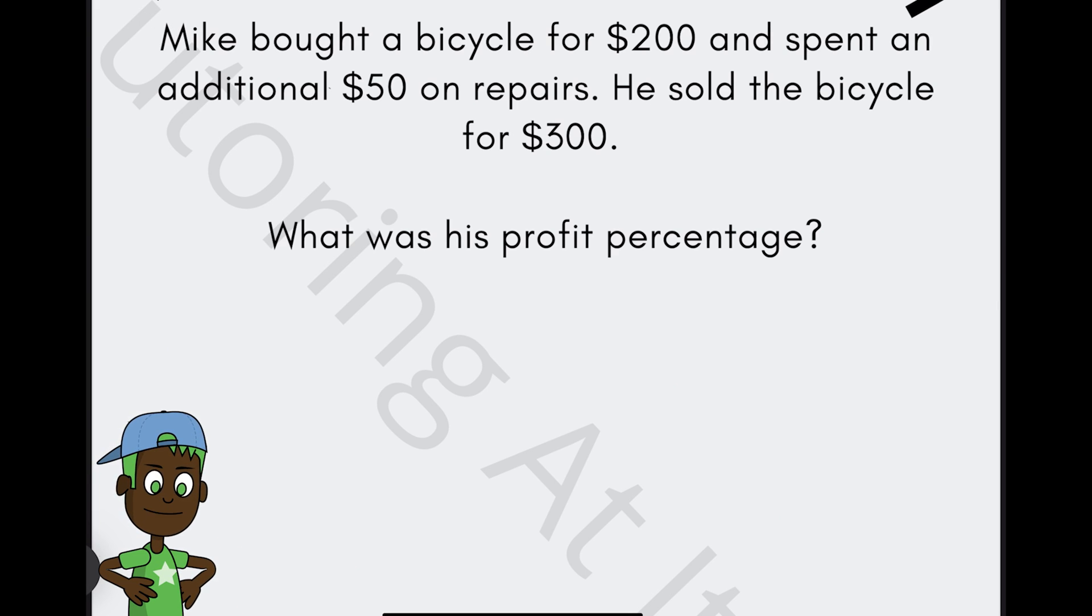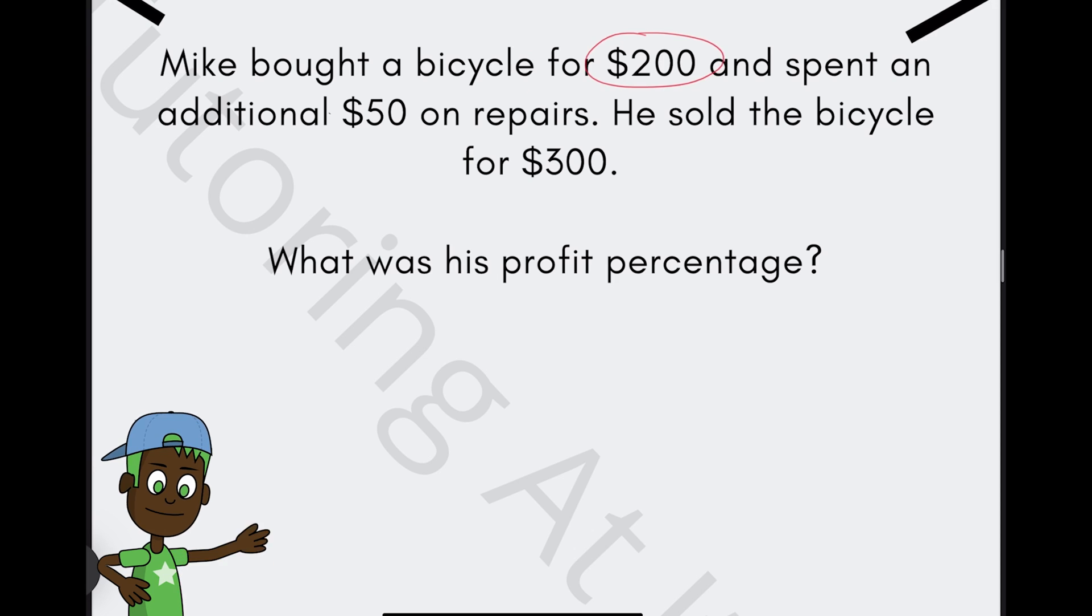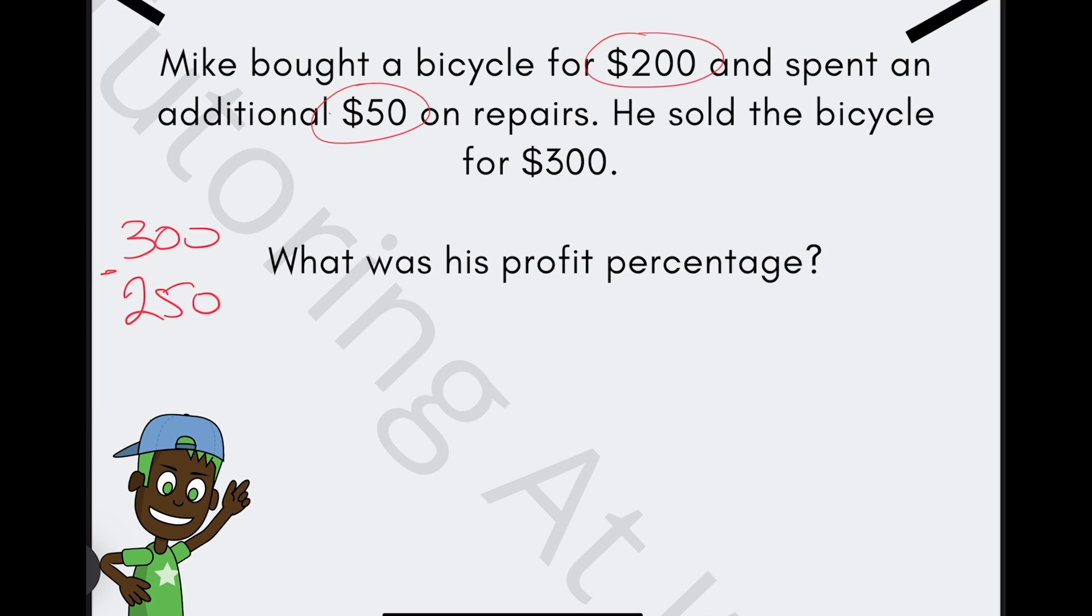Mike bought a bicycle for $200 and spent an additional $50 on repairs. He sold the bike for $300. What was his profit percentage? So the total cost is $200 plus $50, so that's $250. But he then sold it for $300. So if we subtract that, he made a profit of $50.